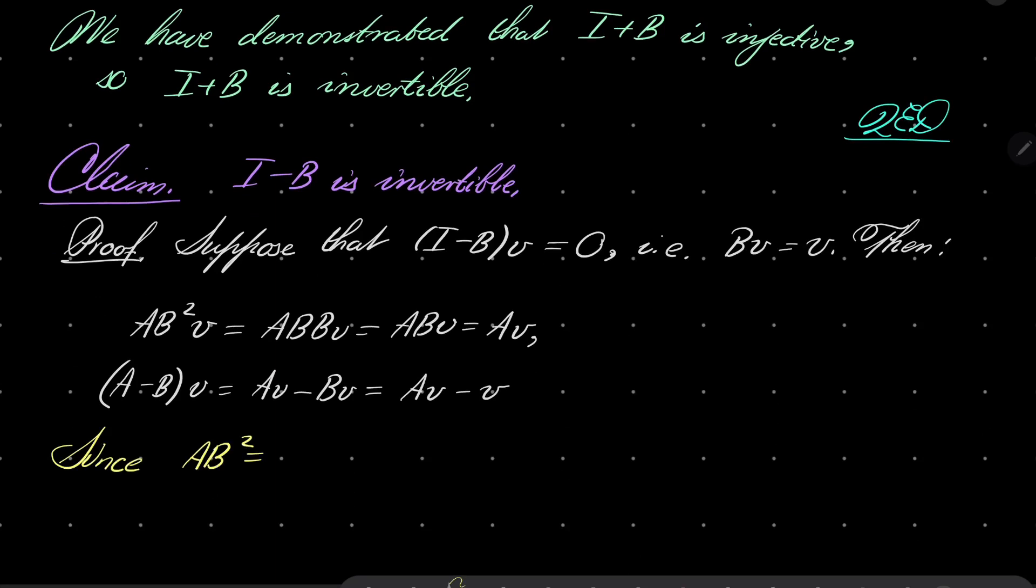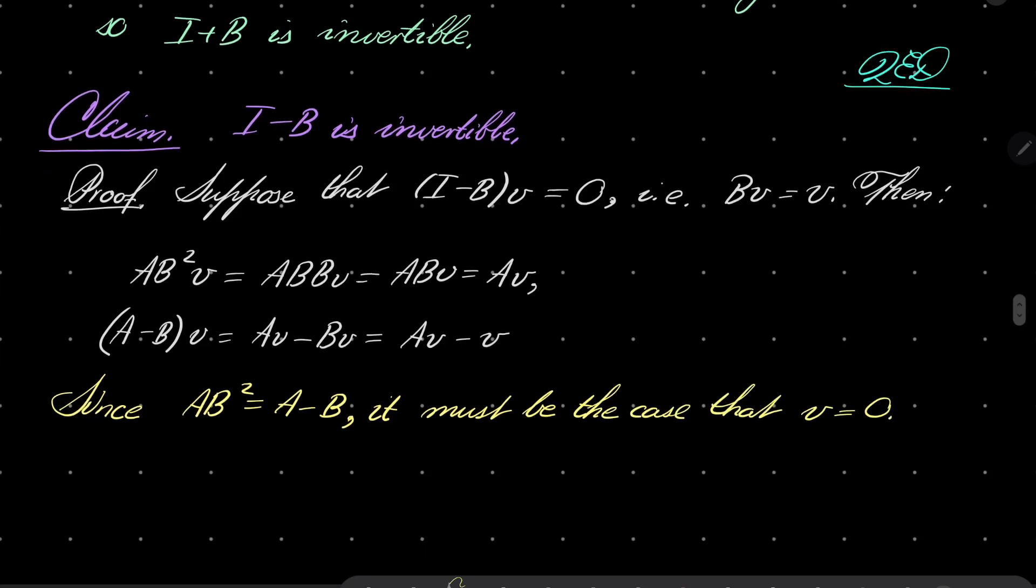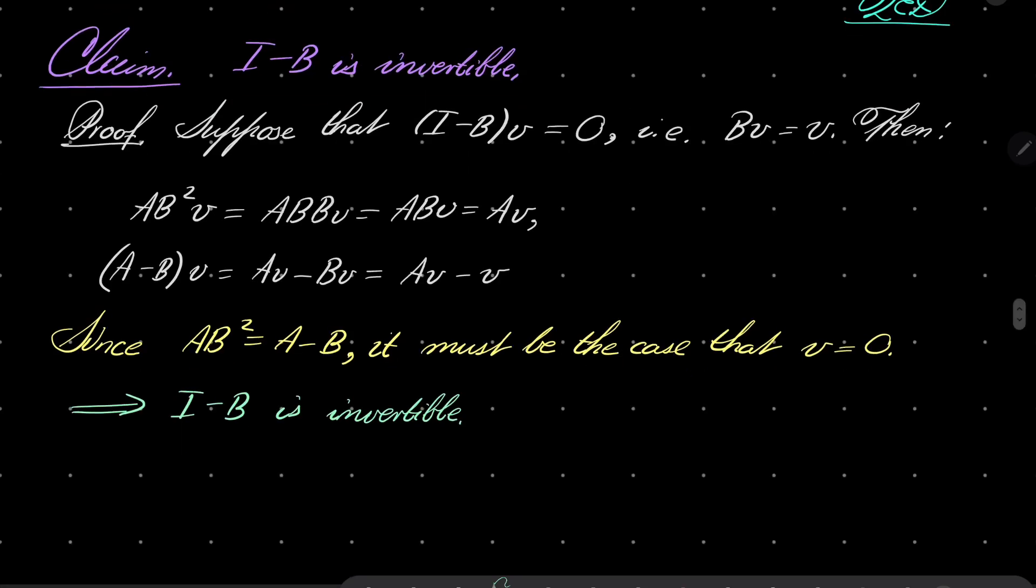it must be the case that V equals zero. So again, it means that I minus B is invertible, which proves my claim.